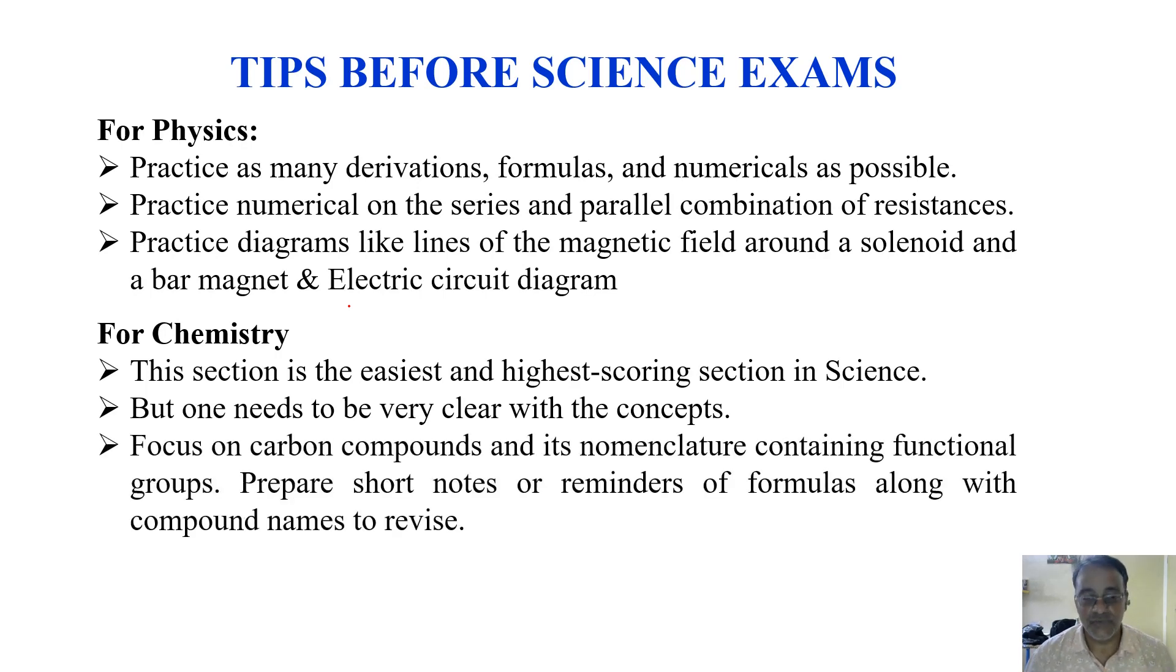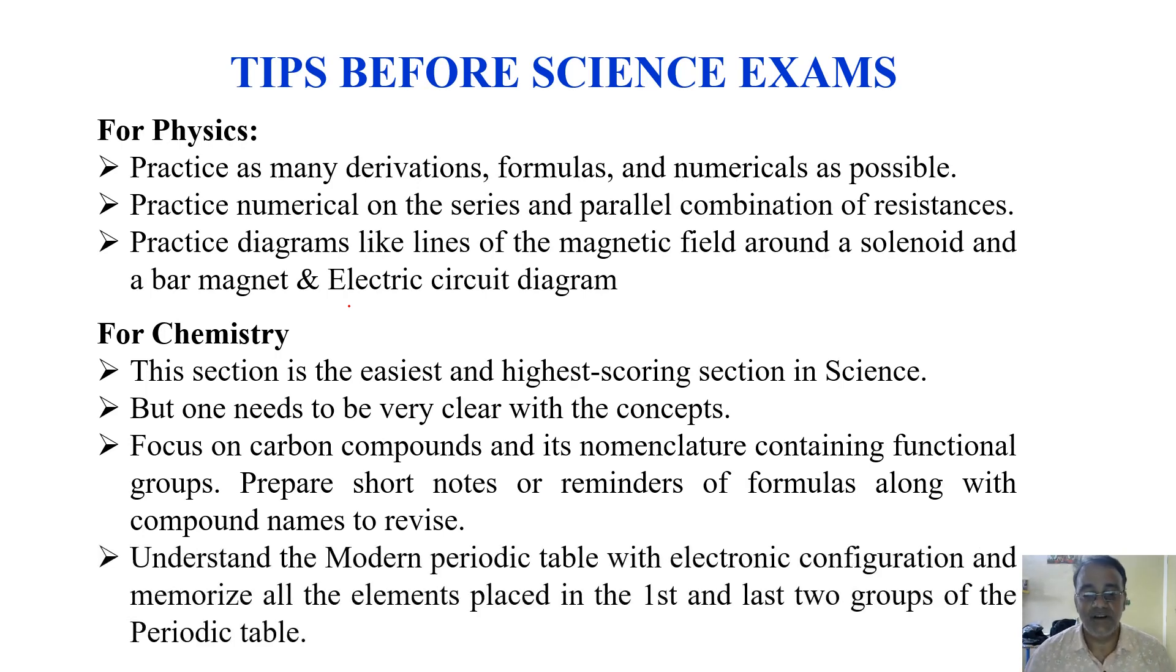Now for chemistry: this section is the easiest and highest scoring section in science, but one needs to be very clear with the concepts. So focus on carbon compounds and its nomenclature containing functional groups. Prepare short notes or reminders of formulas along with some compound names to revise. This will be very useful during the final revision.